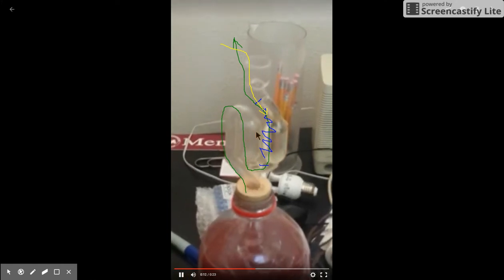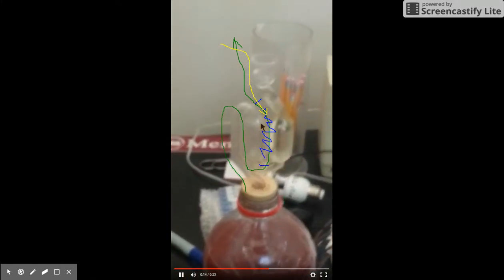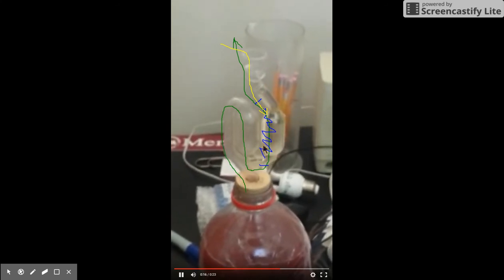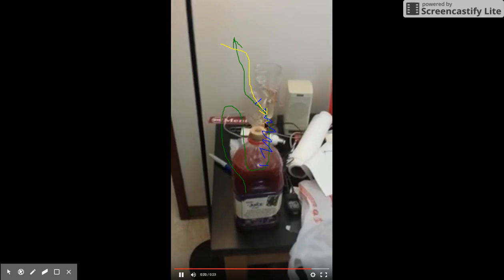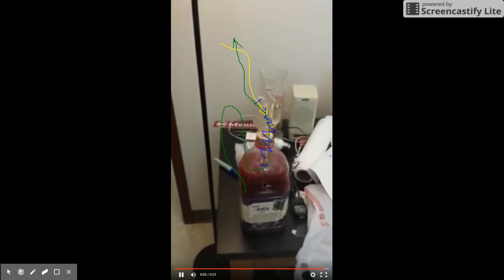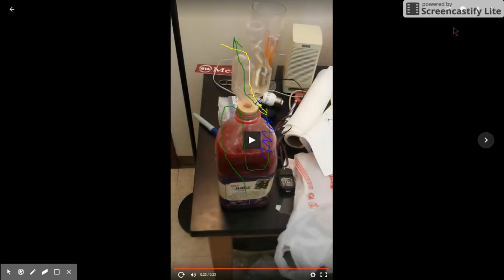This is an airlock, and this is how we normally make wine. You can see this is bubbling pretty quickly here. Again, this is just grape juice, so hopefully this will help you.